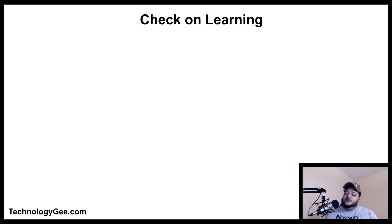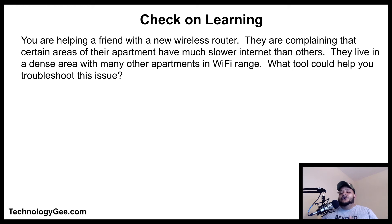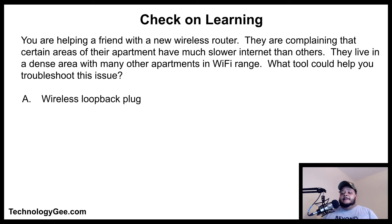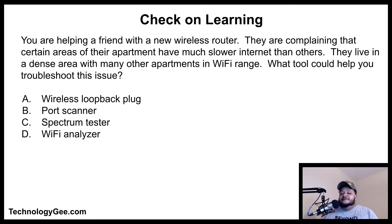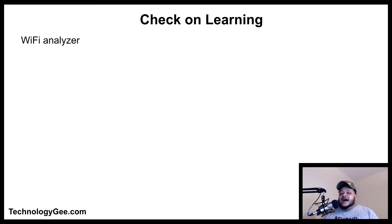Check on learning: You are helping a friend with a new wireless router. They are complaining that certain areas of their apartment have much slower internet than others. They live in a dense area with many other apartments in Wi-Fi range. What tool could help you troubleshoot this issue — a wireless loopback plug, a port scanner, a spectrum tester, or a Wi-Fi analyzer? The correct answer is a Wi-Fi analyzer, which could help you identify issues causing interference with your friend's Wi-Fi connection.